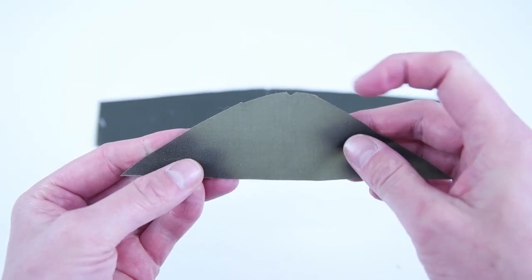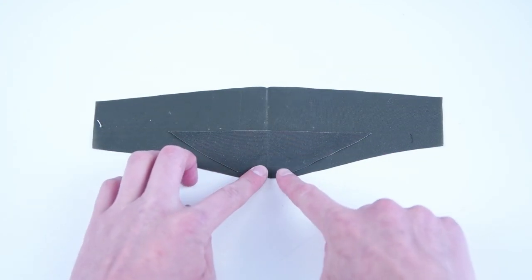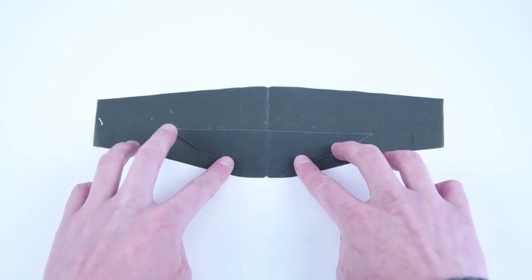Grab the outer layer chin panel and we're going to do the exact same thing with the main panel. Line up the notches, pin it into position, and sew at a quarter inch.